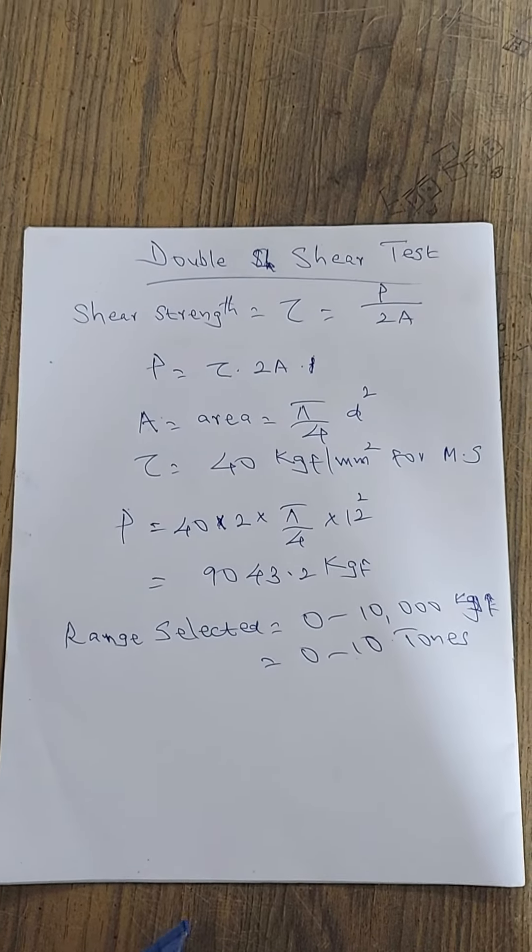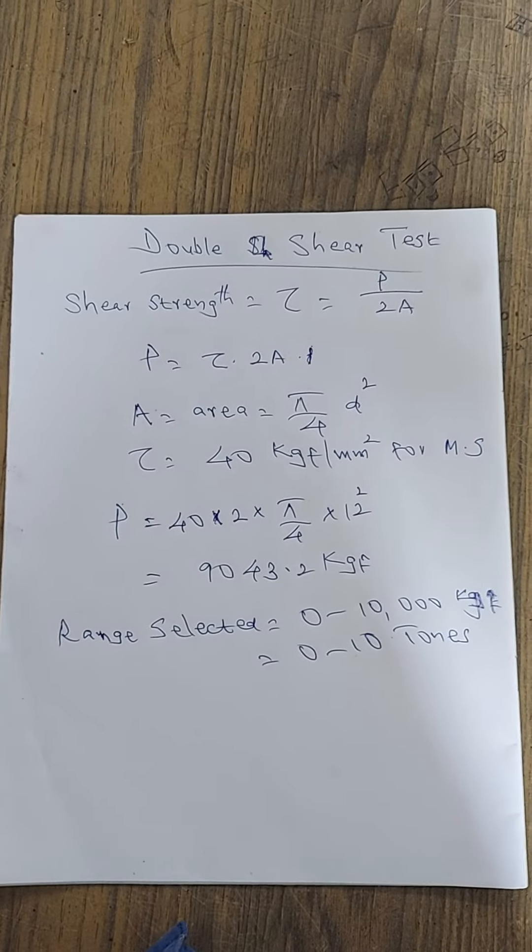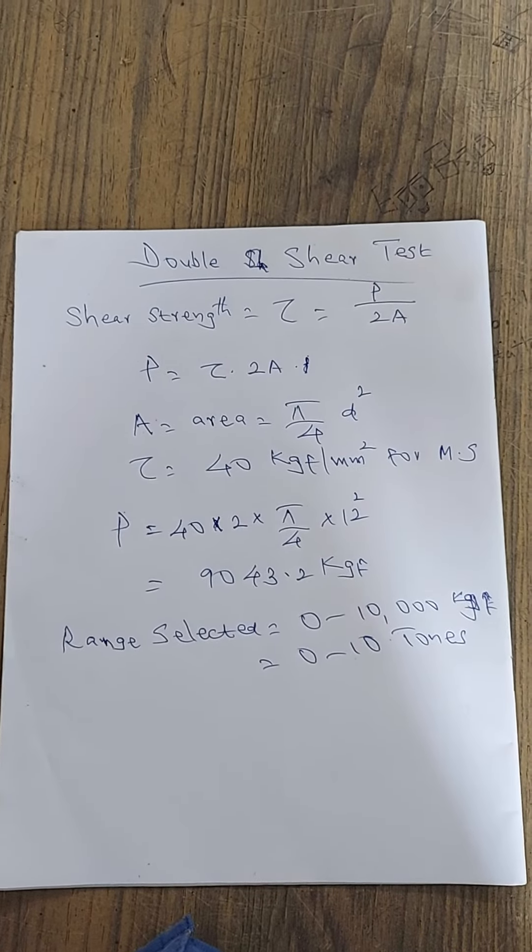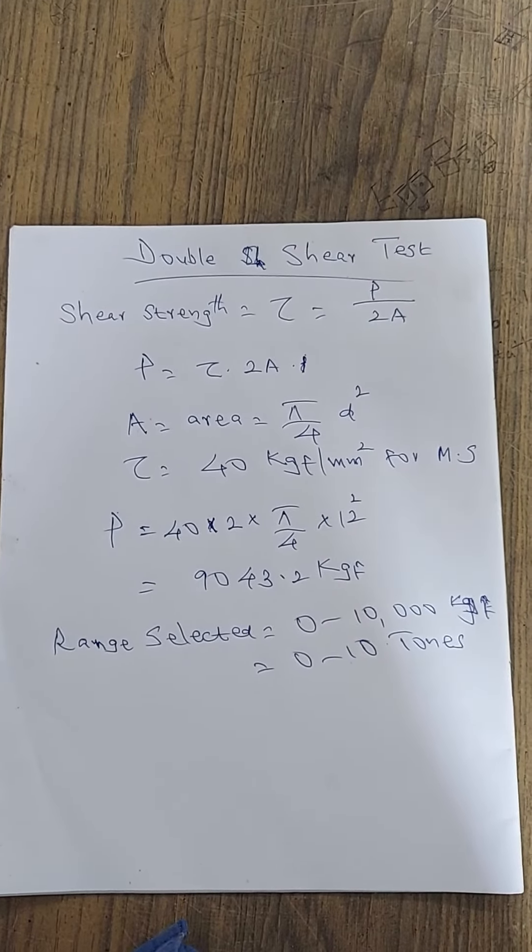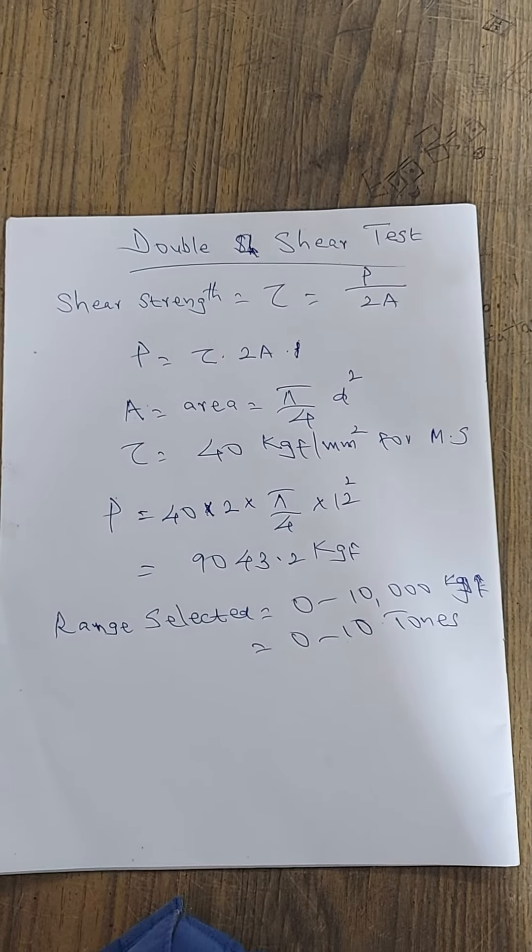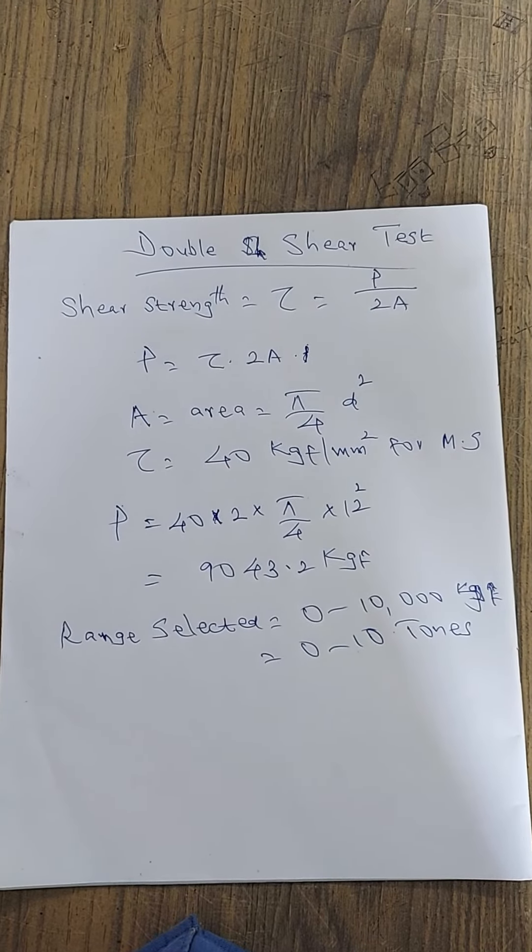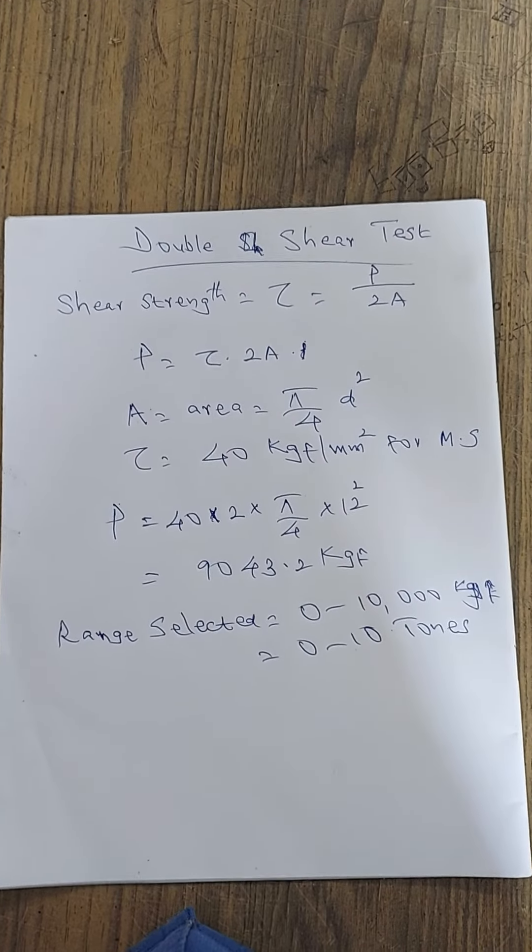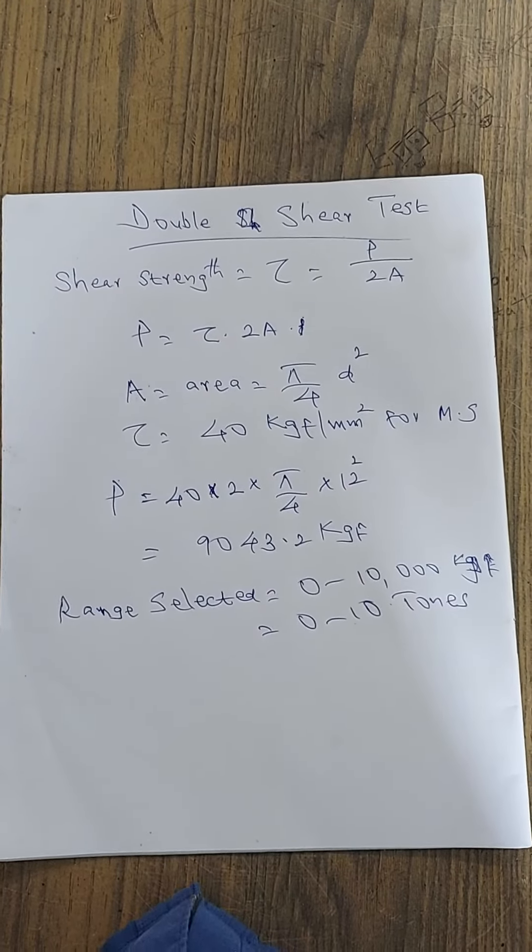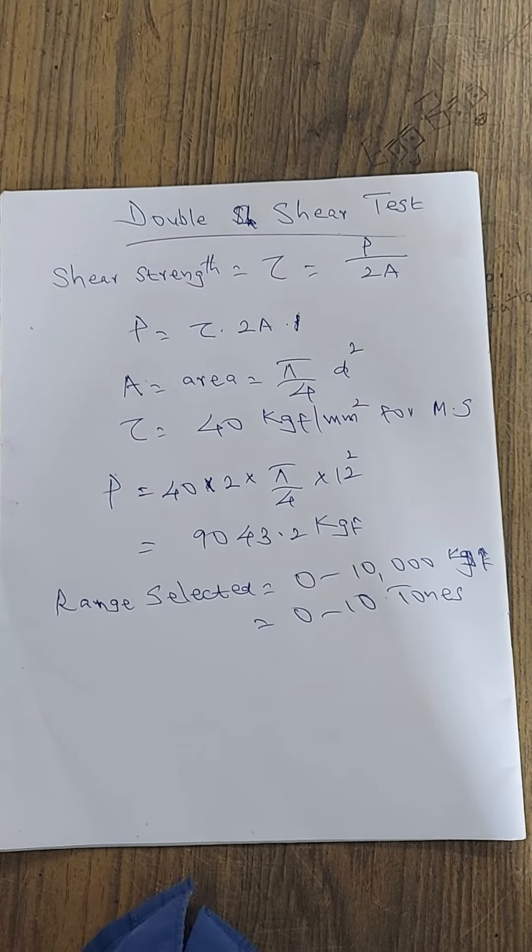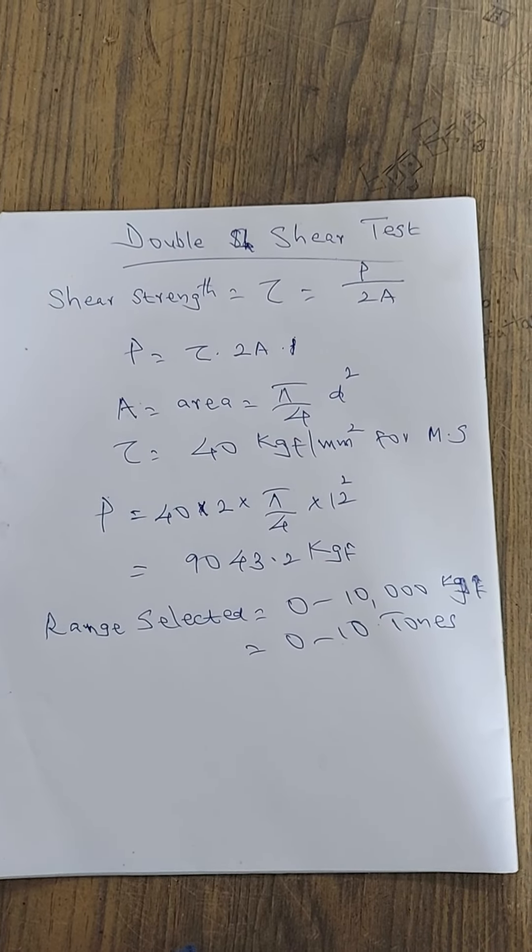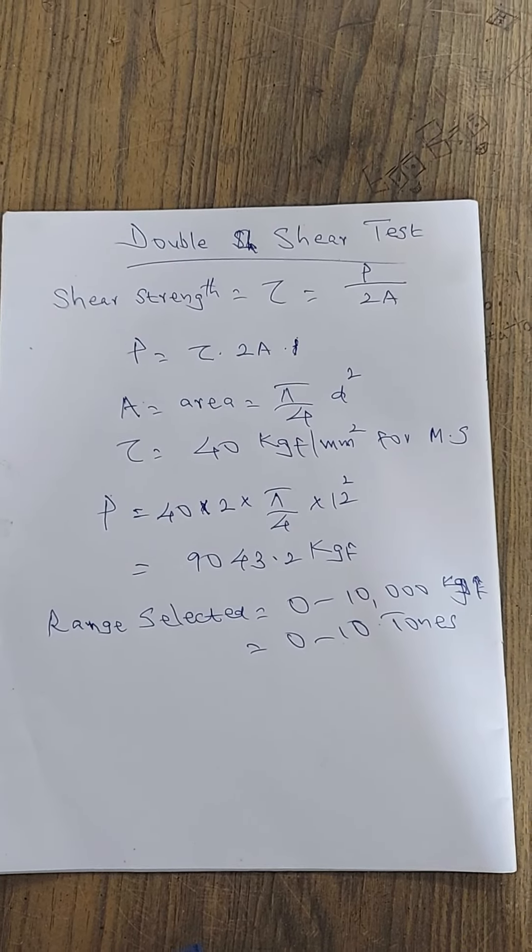If I'm selecting a specimen of mild steel having a diameter of 12, the load at which the failure occurs for the double shear test is given as P equals tau into 2A. So P equals 40 into 2 into pi by 4D squared, and it is around 9043.2 kilogram force. This is the load at which the specimen is expected to fail while conducting a double shear test.